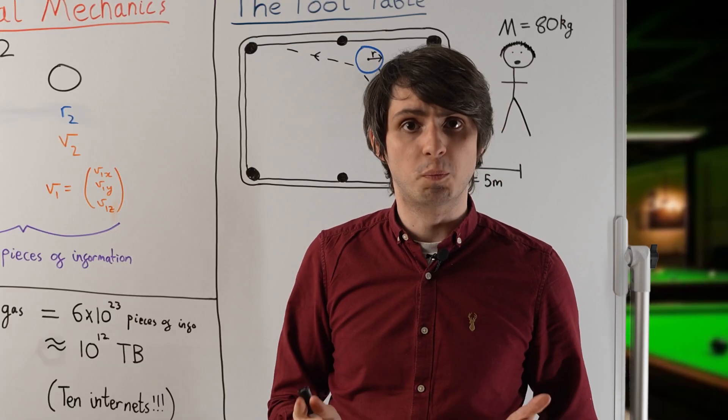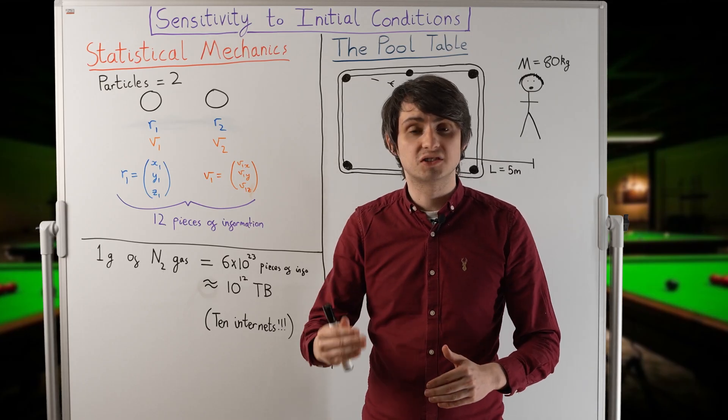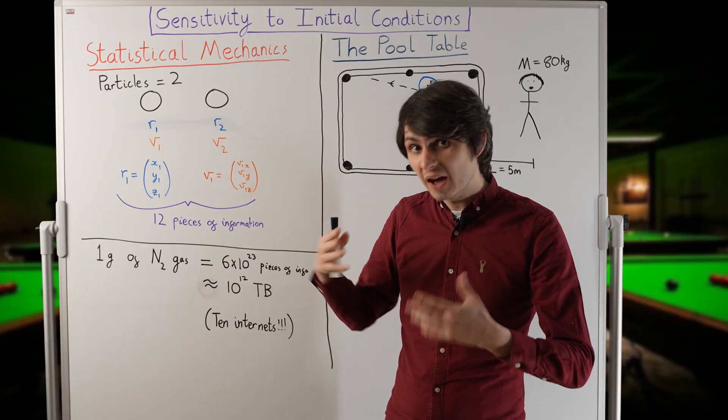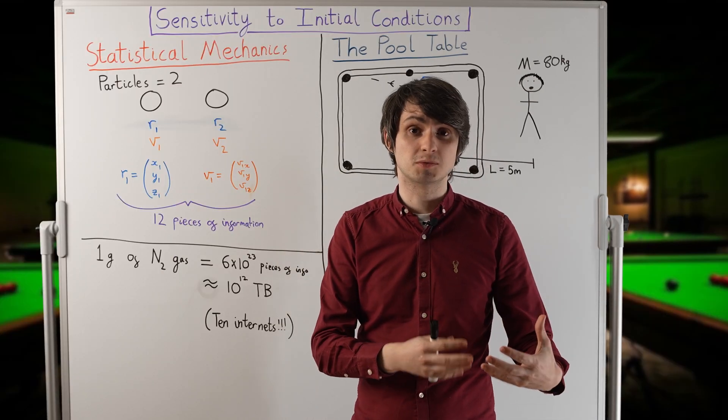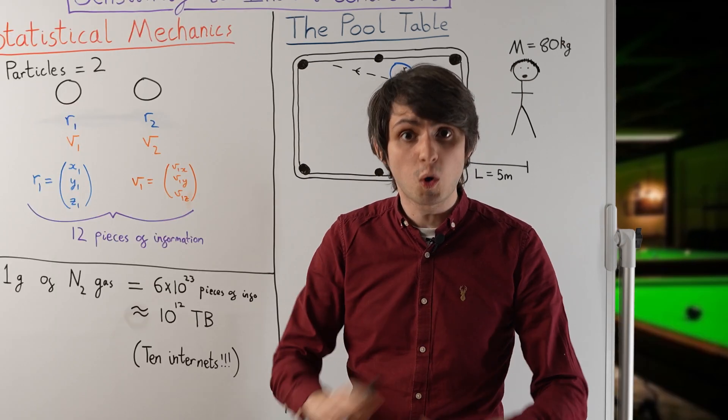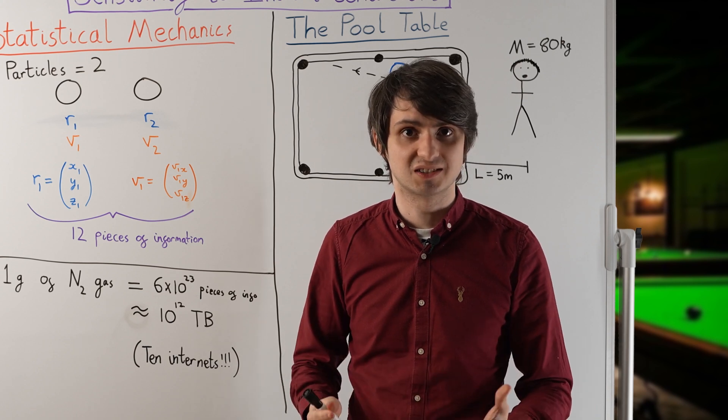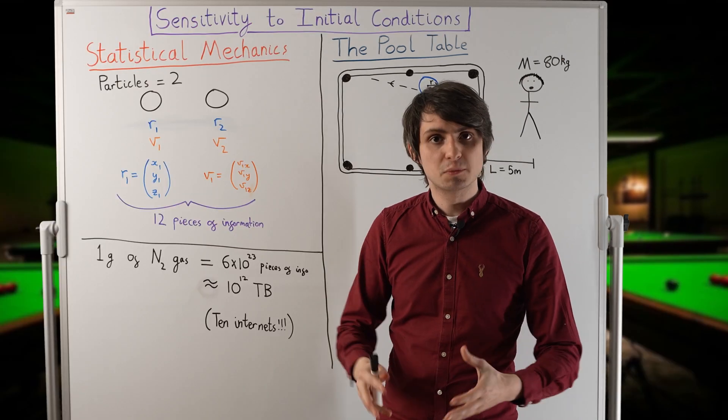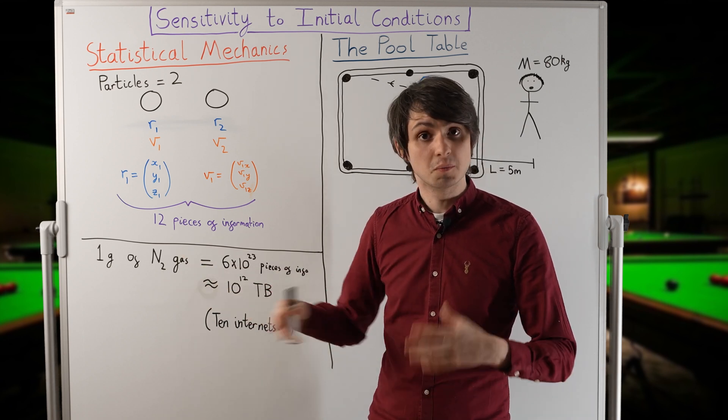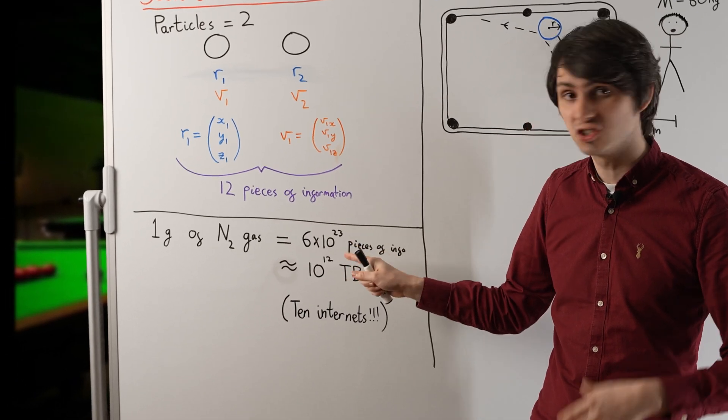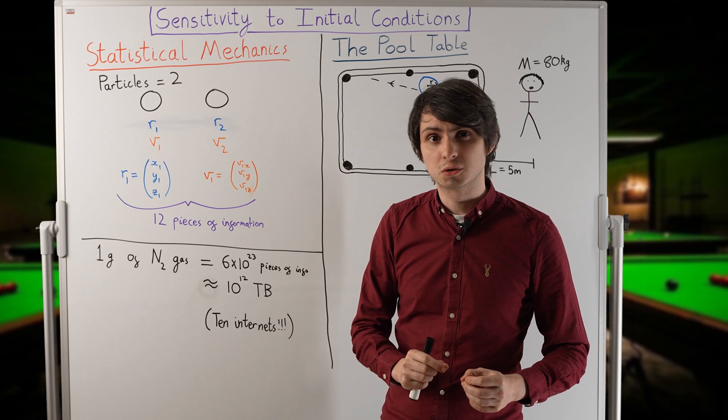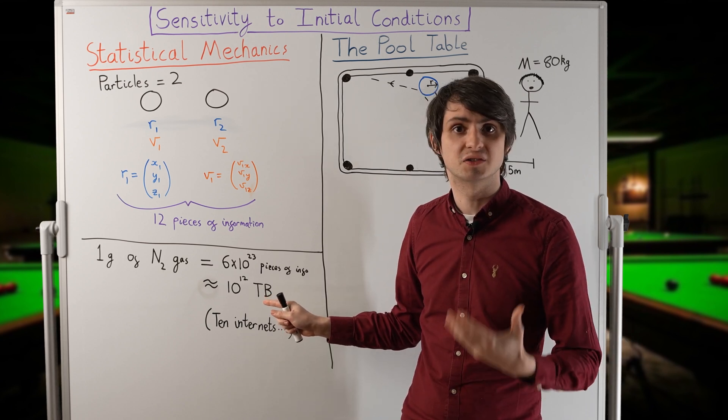But what if we add more particles? For every particle we add to the system, we need to record an additional six numbers. Perhaps it might be possible to model fairly large systems with hundreds or thousands of particles, but we'd quickly become swamped if we try to do this for any realistic system, like a container of gas. A gram of nitrogen gas, for example, contains over 10 to the 23 particles, meaning we'd have to record six times 10 to the 23 pieces of information to model it. That equates to around 10 to the 12 terabytes of data.